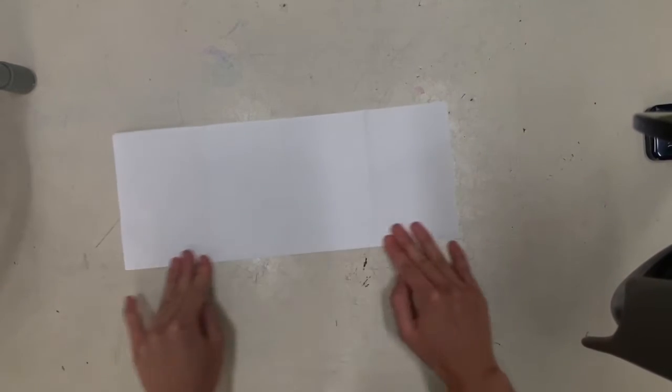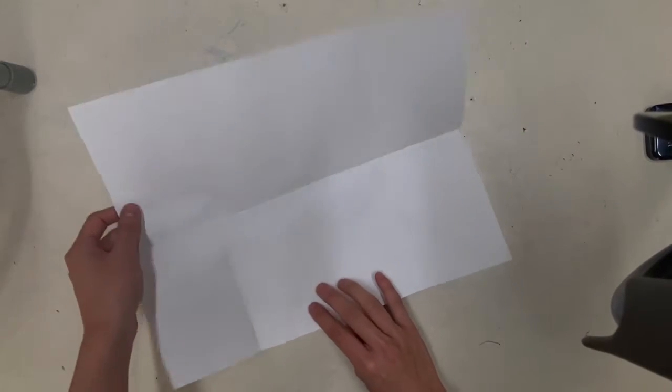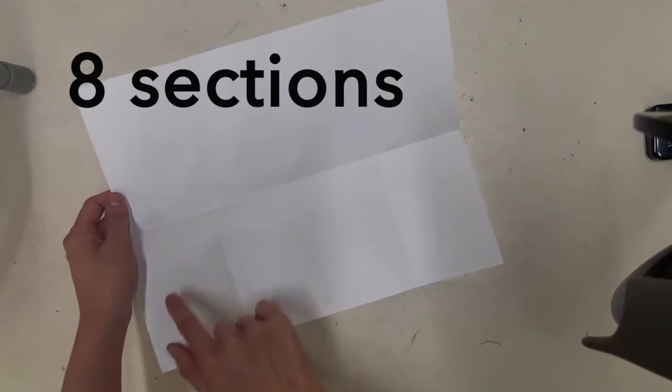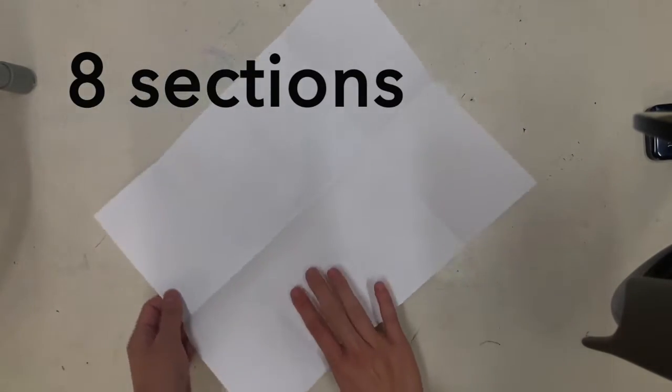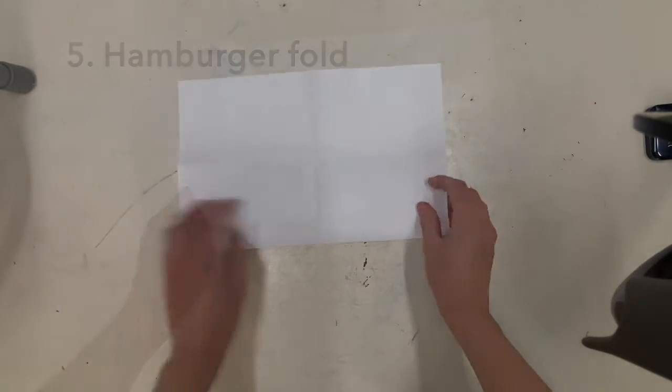Press it down nicely. Then I open it up and I have four rectangles at the top and four rectangles at the bottom. I'm going to make another hamburger fold in half.